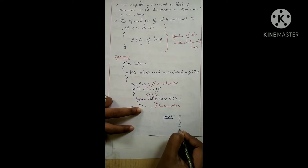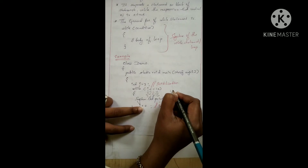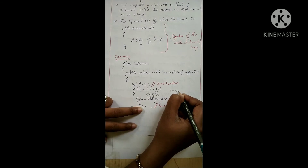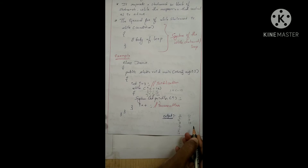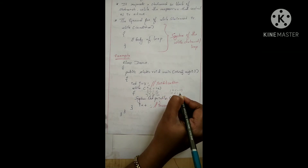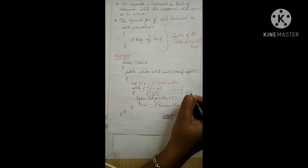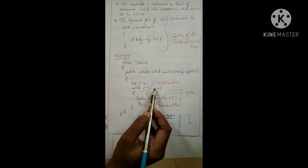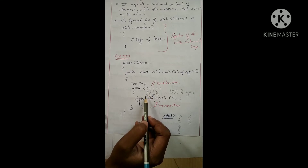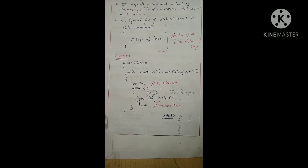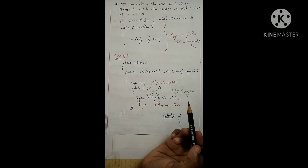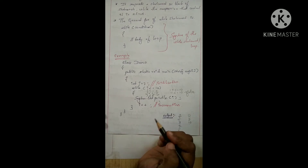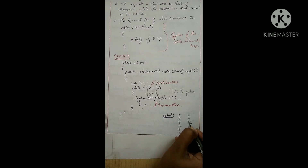Then i reaches 10. 10 is less than or equal to 10, so the condition is true, and 10 is printed. Then i is incremented to 11. 11 is less than or equal to 10 — the condition becomes false. The loop terminates and control comes out of the loop. The while loop only executes when the value is true; otherwise, control passes to the next line of code.